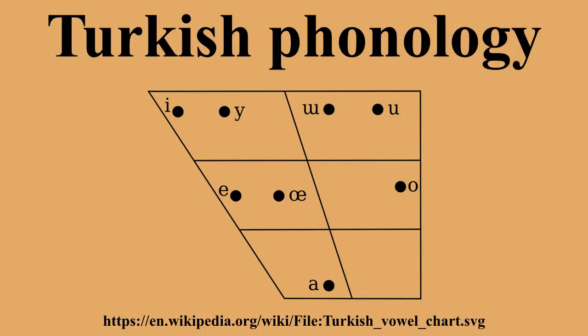Consonants. P is a bilabial, whereas F and V are labiodental. Some speakers realize F as bilabial when it occurs before the rounded vowels Y, U, O, as well as word-finally after the rounded vowels. V is realized as a bilabial approximant when between two vowels, with at least one of them being rounded, and a bilabial fricative when before or after a rounded vowel but not between vowels. Some speakers have only one bilabial allophone and do not make the approximant-fricative distinction.